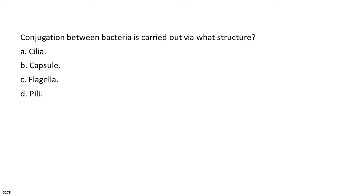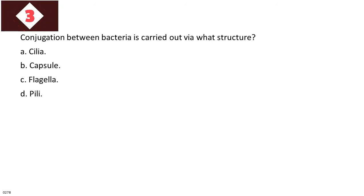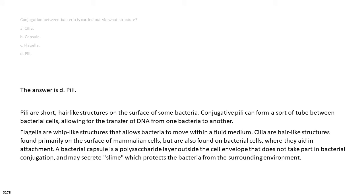Conjugation between bacteria is carried out via what structure? A. Cilia. B. Capsule. C. Flagella. D. Pili. The answer is D. Pili. Pili are short, hair-like structures on the surface of some bacteria. Conjugative pili can form a sort of tube between bacterial cells, allowing for the transfer of DNA from one bacteria to another. Flagella are whip-like structures that allow bacteria to move within a fluid medium. Cilia are hair-like structures found primarily on mammalian cells but also on bacterial cells, where they aid in attachment. A bacterial capsule is a polysaccharide layer outside the cell envelope that does not take part in bacterial conjugation and may secrete slime which protects the bacteria from the surrounding environment.